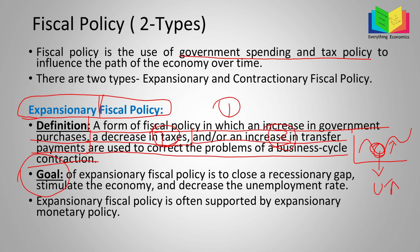Expansionary fiscal policy is often supported by expansionary monetary policy. An expansionary monetary policy means an increase in money supply, so people will again have more money. That's the other part of the policy that the government has — monetary policy. But here we need to understand what fiscal policy is and how the government uses it.